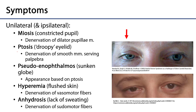The classic triad that you hear with respect to Horner's is miosis, ptosis, and anhydrosis, but there's actually a wider range of symptoms that can accompany Horner's. It's important to understand that Horner's is going to present typically unilaterally — on one side of the body, in this case one side of the head — and ipsilaterally, meaning on the same side as the lesion.